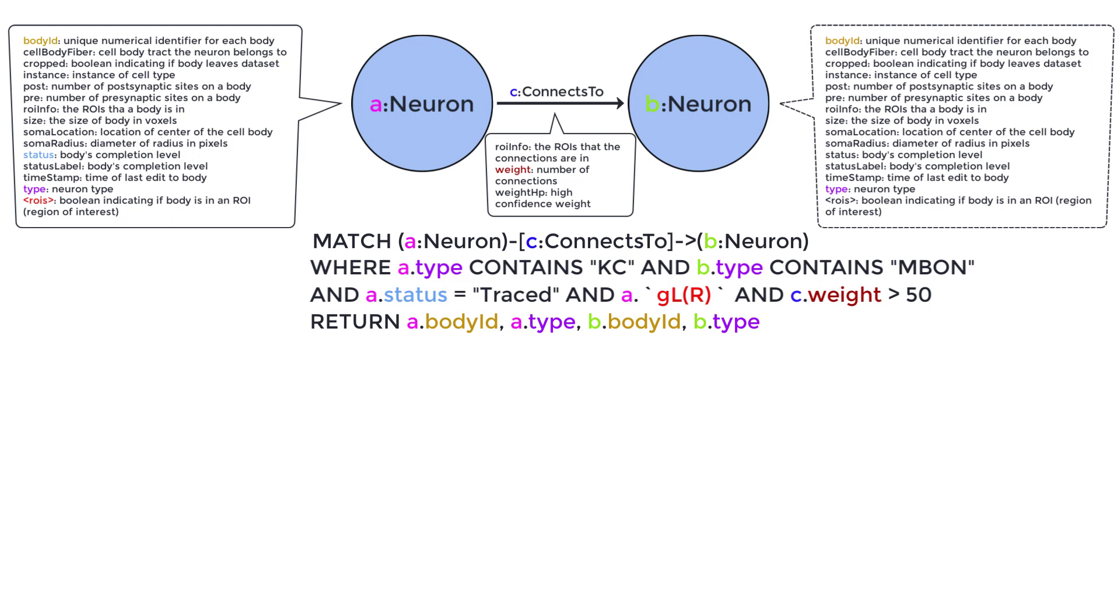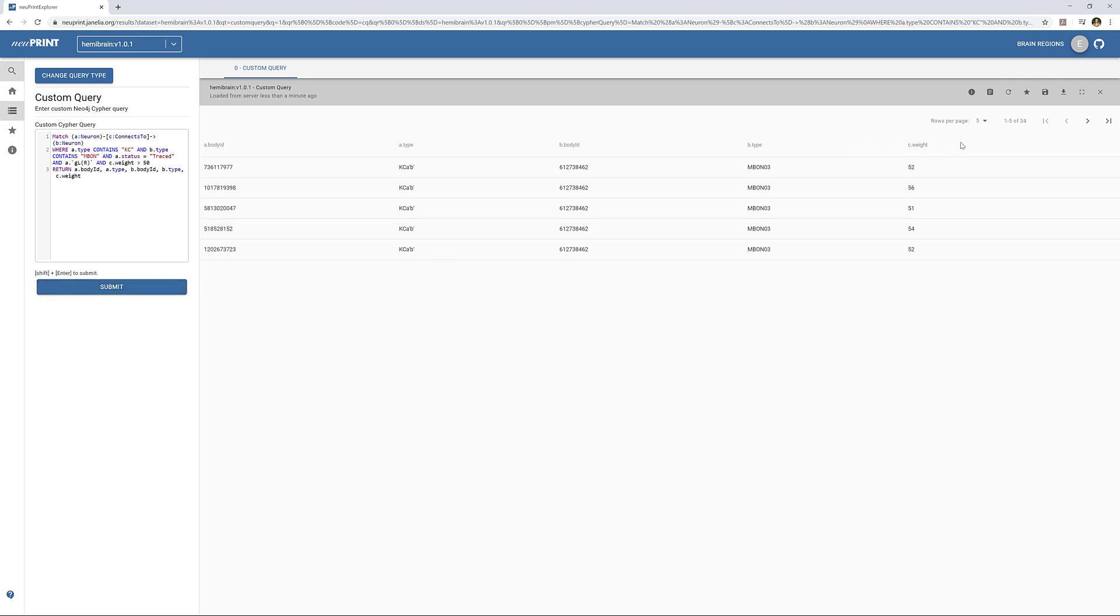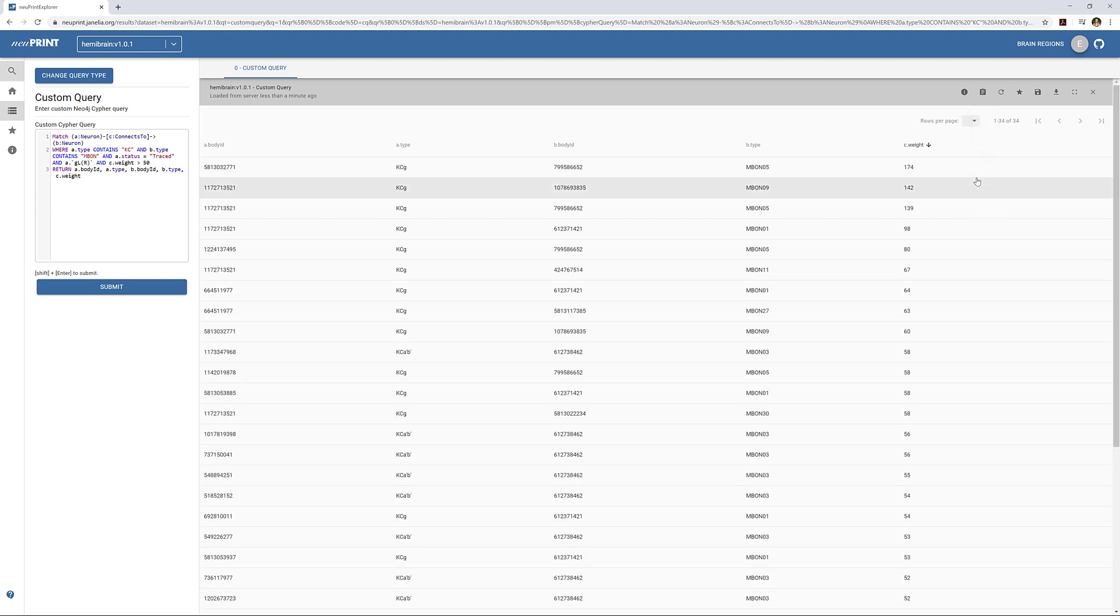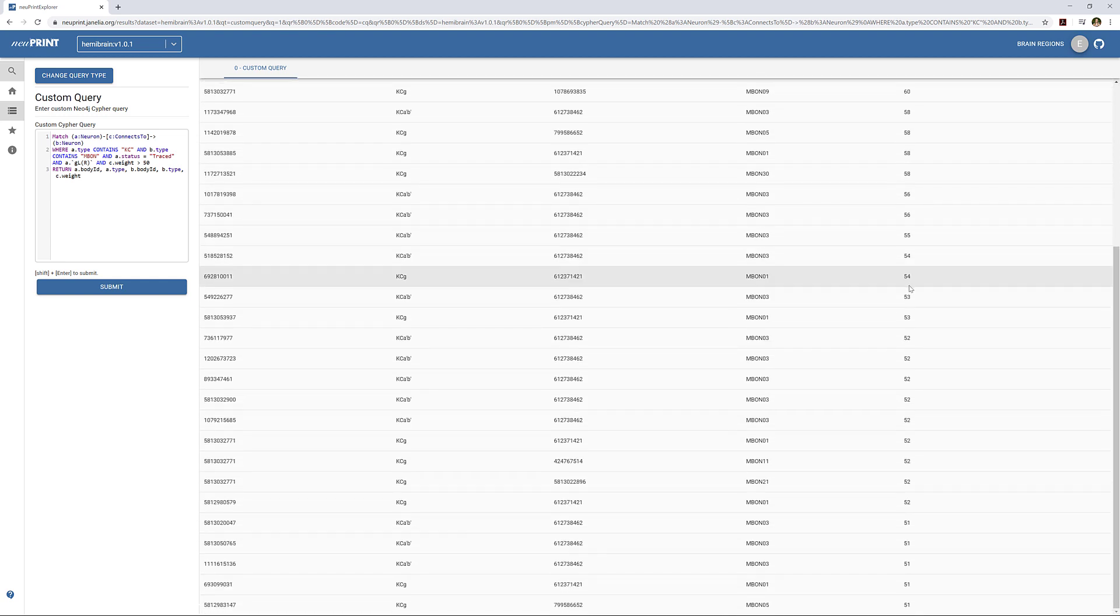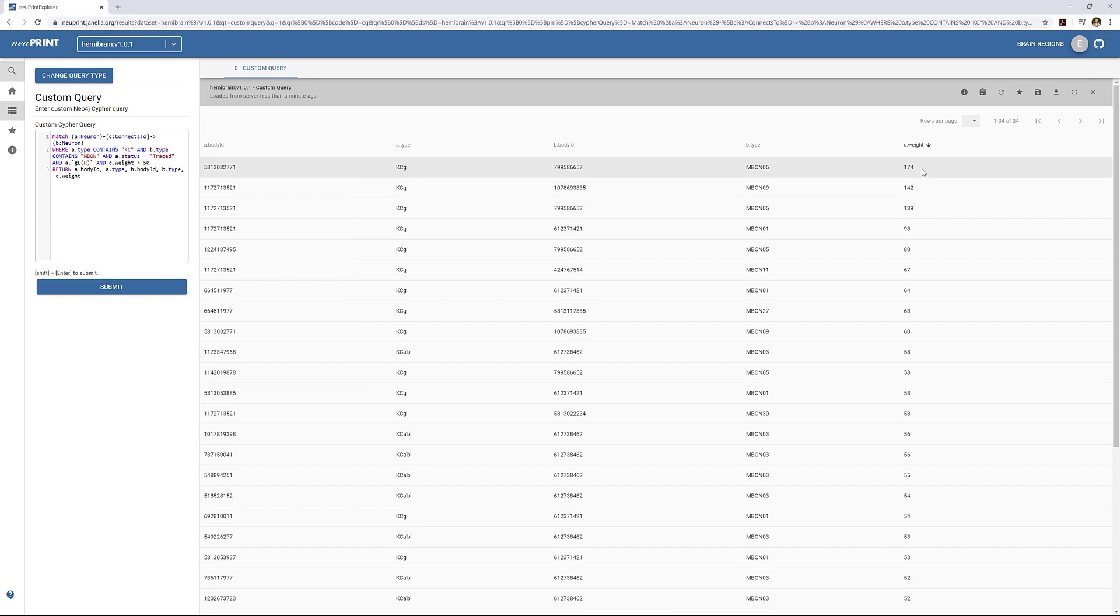Before we run this query, let's add c.weight to the return line so that we can see the number of connections between each neuron. We can run this query in NewPrint, and see that this time we get 34 results. This KCG connects to this M-bond number 5 174 times, which is higher than any other KC connecting to an M-bond on this list. Now what if we wanted to look at the relative locations of each of these synapses to do further analysis?